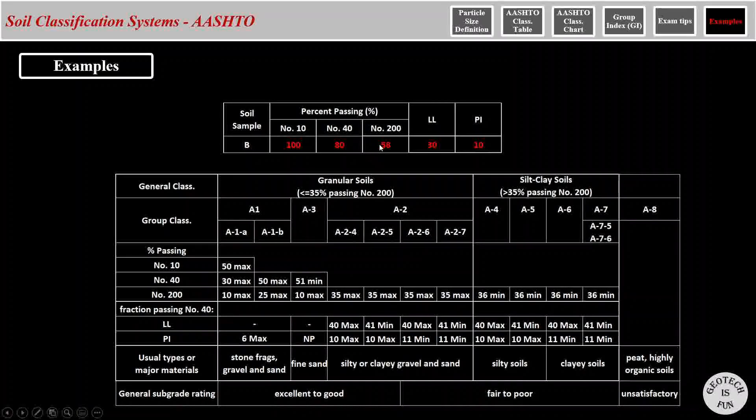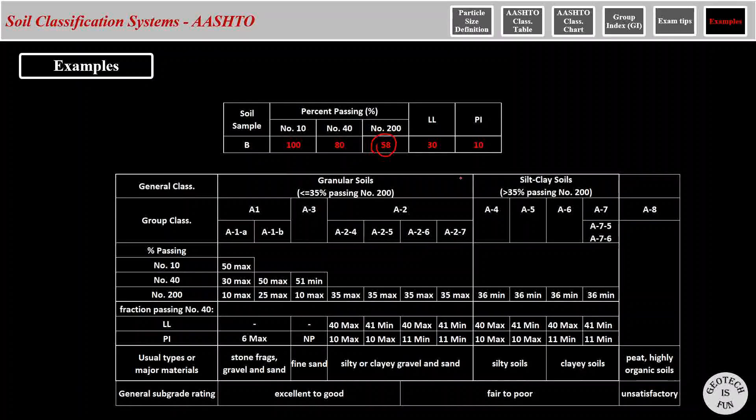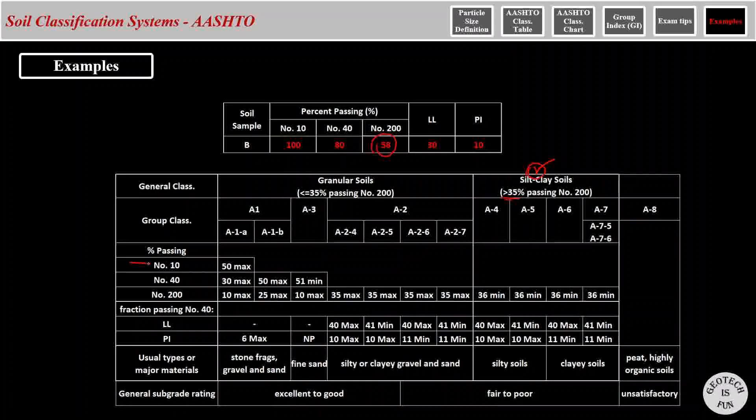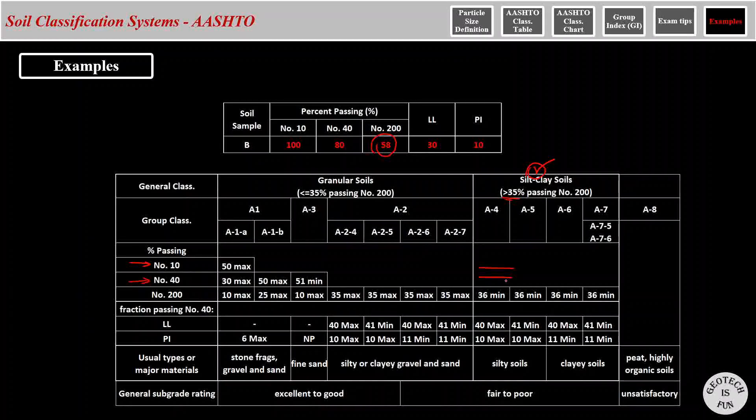As we just talked about it in the tips, the very first thing that we do is we look at the percent passing sieve number 200. And in this case, it's 58%. Now, is it more than 35%? Yes, it is. So we are on the right side of this table. Do we need to look at the percent passing sieve number 10 and 40? No, we do not. Because on this side of the table, there is no constraint for these two sieves. And we can just jump into the plasticity section of the table. Liquid limit of 30. We can say that A-5 and A-7s are gone. And we are only left with A-4 and A-6. Plasticity index of 10. A-6 is gone. So the answer to this question is A-4. And I'll let you calculate the GI for this soil. But it's going to be 3.